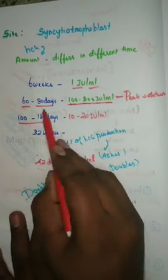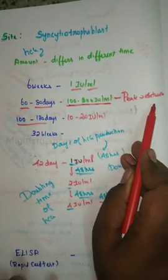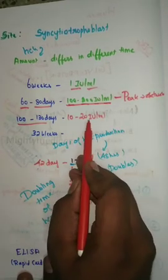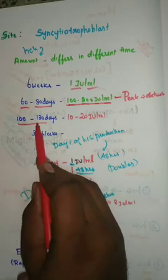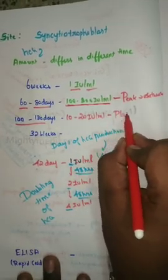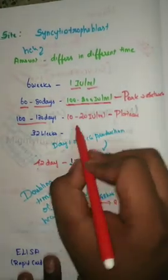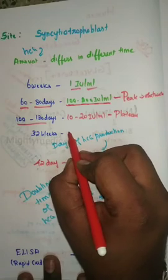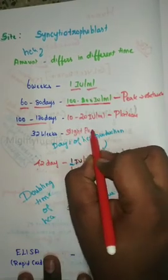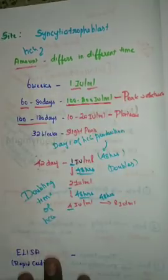Once it reaches the peak at 60 to 80 days, it plateaus, then reduces a little. It comes down to 10 to 20 international units per ml at around 100 to 130 days. That level is then maintained as a plateau throughout the rest of the pregnancy, with a slight secondary peak.